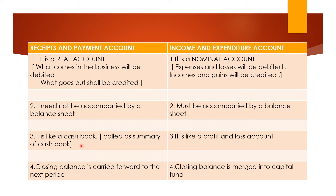The third point states that receipt and payment account is just like a cash book — it is also called a summary of the cash book. When you prepare your cash book, cash received and cash paid are everything recorded there. Similarly, in the receipt and payment account, whatever cash transactions you are doing will be recorded there. That is why it is stated that it just resembles a cash book.